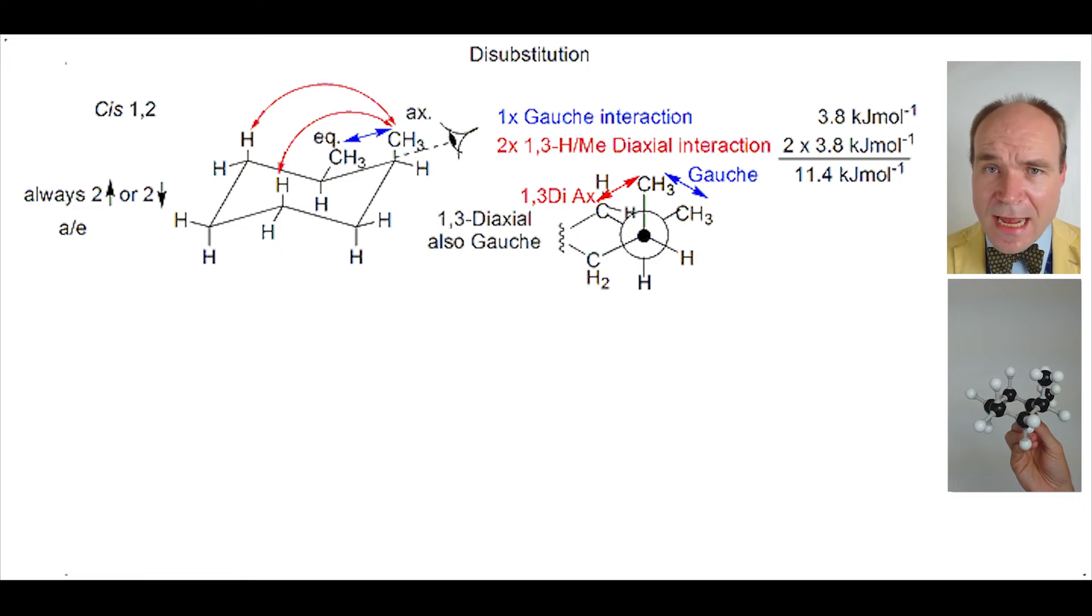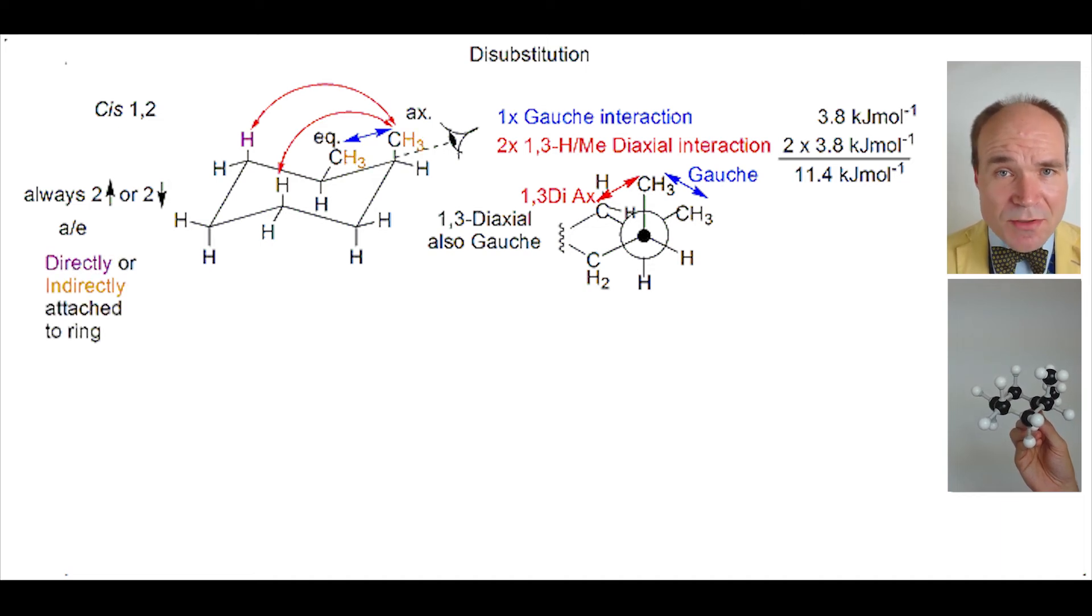Now all 1-3 diaxial interactions are actually gauche interactions but not all gauche interactions are 1-3 diaxial interactions. And this is because axial and equatorial are synonymous with rings and not all gauche interactions are cyclic in nature. Some are acyclic. For the purposes of this discussion, we will describe a gauche interaction as having both components that are indirectly attached to the ring. And we'll use the term 1-3 diaxial interaction to tell you that one component is directly attached to the ring, namely the hydrogen. The other component is indirectly attached to the ring, namely the methyl group.